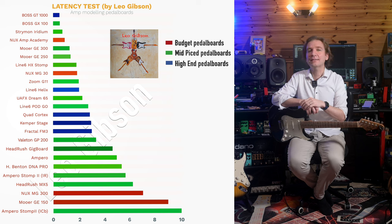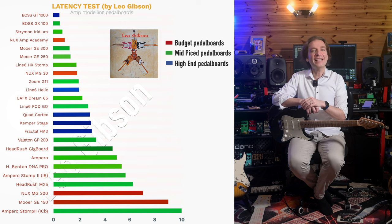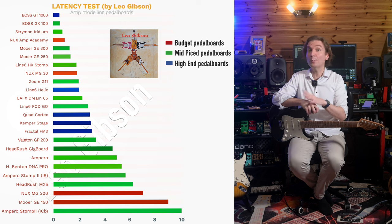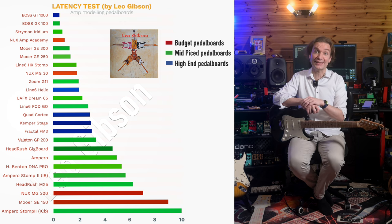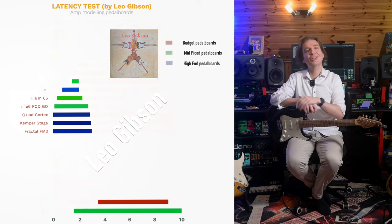In positions two and one, on par, we have the Boss GT-1000 and the GX-100, both at around 0.7 milliseconds. Very interesting in my opinion, with pretty unexpected results honestly. What do you think? Please let me know in the comment section below.